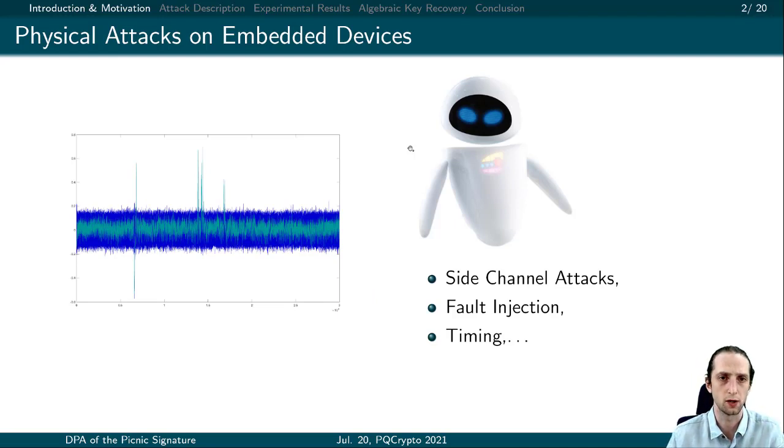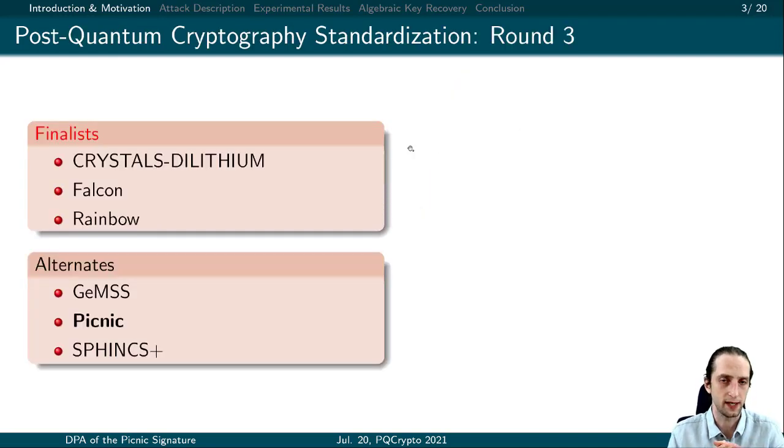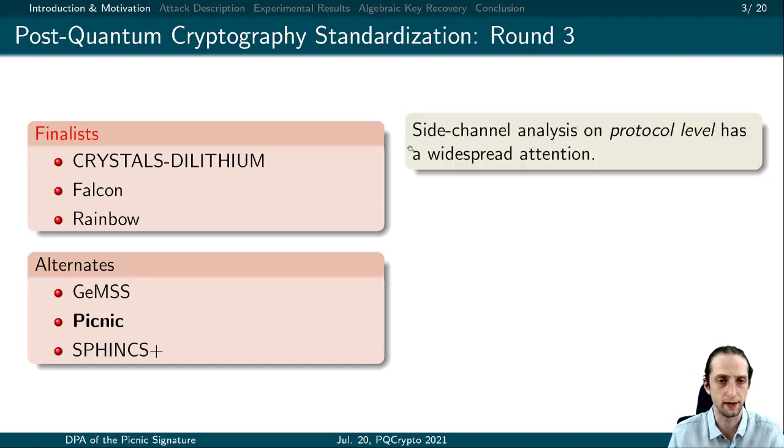However, these results are known since the seminal work by Kocher et al. in 1998. The main reason we would like to revisit these attacks is the ongoing NIST post-quantum project. The competition is in the third round with a fourth round on the horizon. Here we can see a summary of the finalists and alternate candidates. This research is motivated by the fact that side-channel resistance of cryptographic schemes is becoming more relevant as they are deployed in real-world conditions.